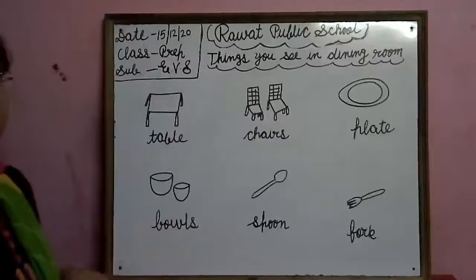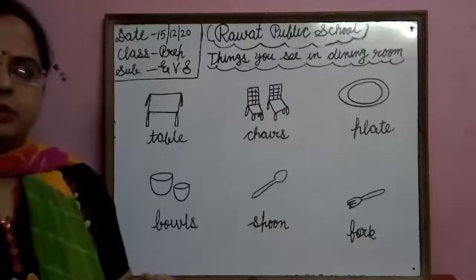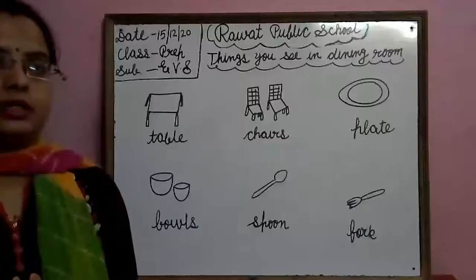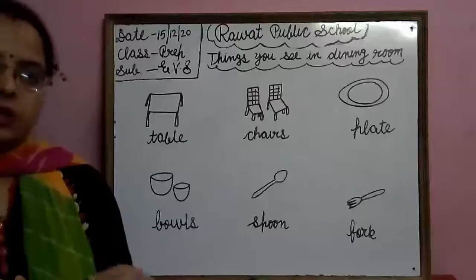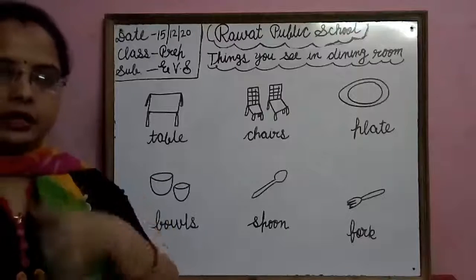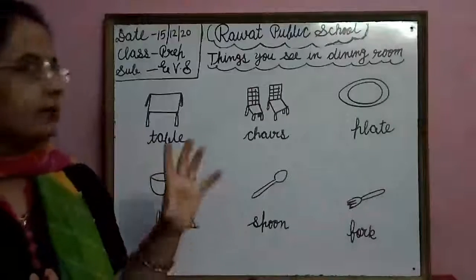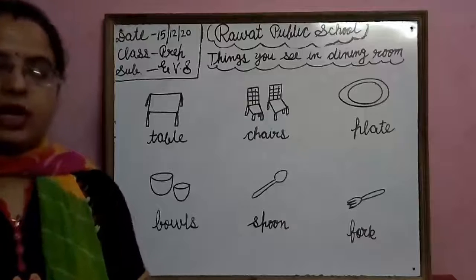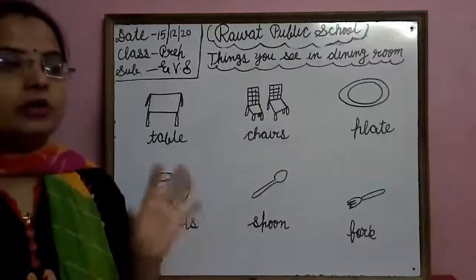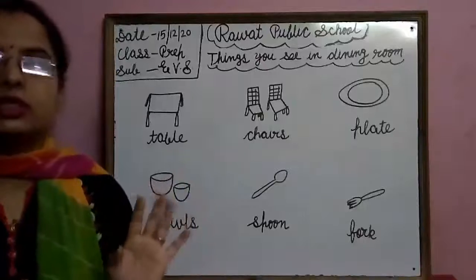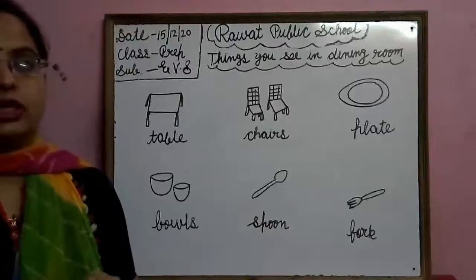Okay, so बेटा, आपको अपना खाना बहुत अच्छे से, good manners से खाना चाहिए। यह नहीं कि आप गंदे तरीके से खाना खाएंगे — no, this is bad manners. Good manners वाले बच्चे अपना खाना proper way में खाते हैं। आपको spoon से खाना है, fork से खाना है, bowl और plate properly use करनी है। खाना फैला कर नहीं खाते — यह bad manners होते हैं। खाने को जूठा भी नहीं छोड़ना चाहिए। माँ आपके लिए प्यार से खाना बनाती हैं, तो आपको पूरा खाना finish करना चाहिए।